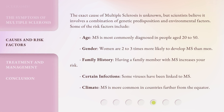The exact cause of multiple sclerosis is unknown, but scientists believe it involves a combination of genetic predisposition and environmental factors. Some of the risk factors include age — MS is most commonly diagnosed in people aged 20 to 50. Gender — women are 2 to 3 times more likely to develop MS than men. Family history — having a family member with MS increases your risk. Certain infections — some viruses have been linked to MS. Climate — MS is more common in countries farther from the equator.